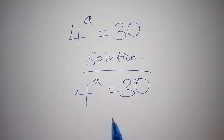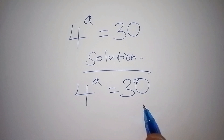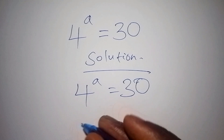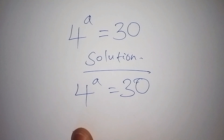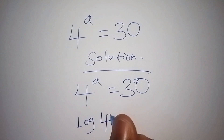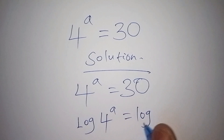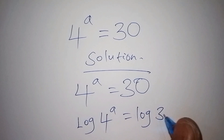The first thing that we need to do is introduce the log for both sides so that we can be able to solve it in the correct way. We shall have the log of 4 to the power of A equals the log of 30.